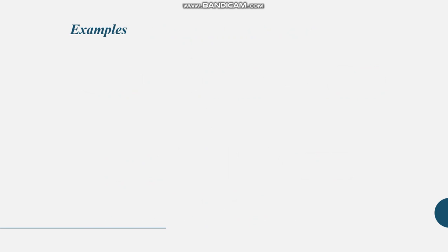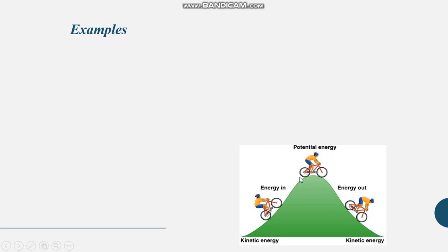Now let's see transformation of energy with kinetic and potential energy. When an object is at rest, apply force and it is set into motion — like a bicycle going up. Whenever an object is in motion, it has kinetic energy. When it reaches a height from the ground, it slows and almost stops — at that point it has potential energy. When it comes back down, potential energy is converted back to kinetic energy.